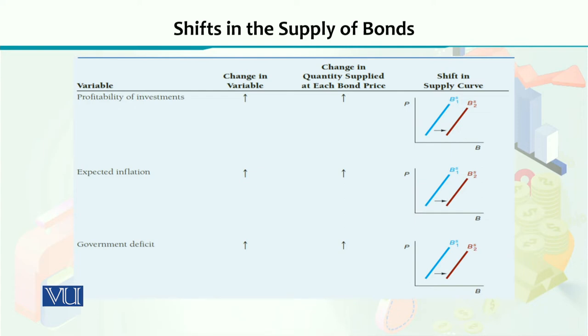So looking at this particular set of diagrams, if the profitability of investment increases, you will be needing more money to invest. When you need more money to invest, you will be issuing more bonds and more financial instruments in the market so that more money can be collected for investment purposes, because you are seeing bright future profits going up. As a result, the supply curve will shift forwards, and that can be seen as the brown curve. The initial supply curve is the blue line, which increases to the brown line showing a forward shift in the supply curve.